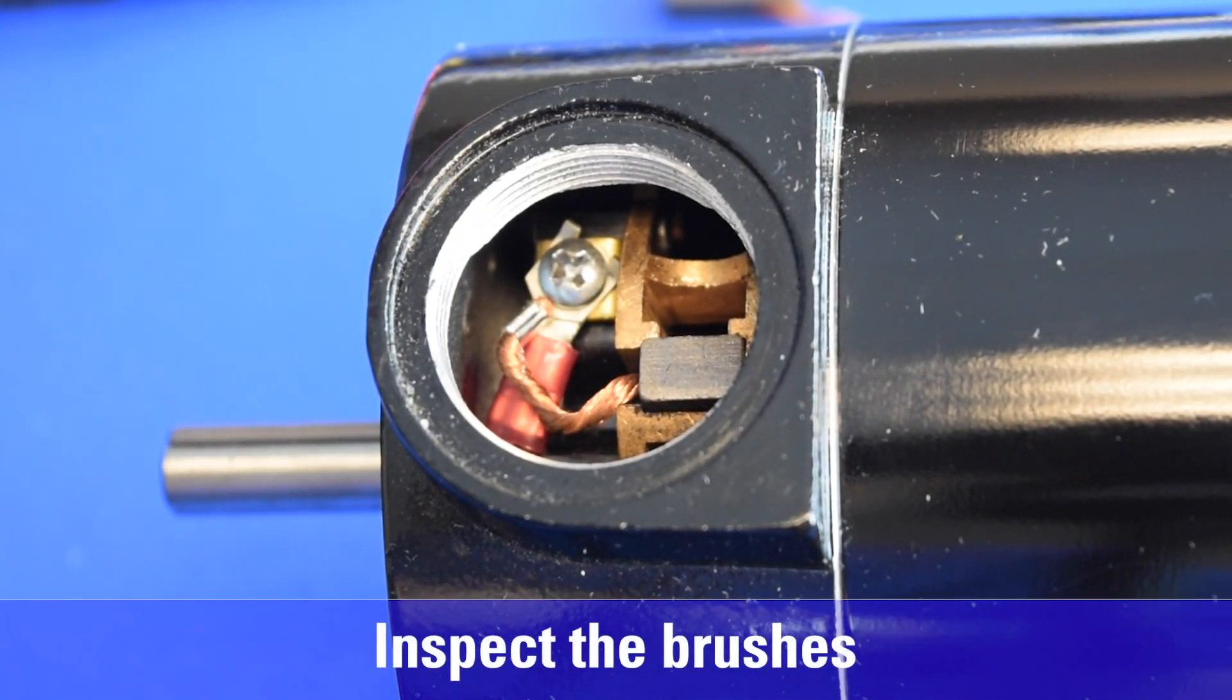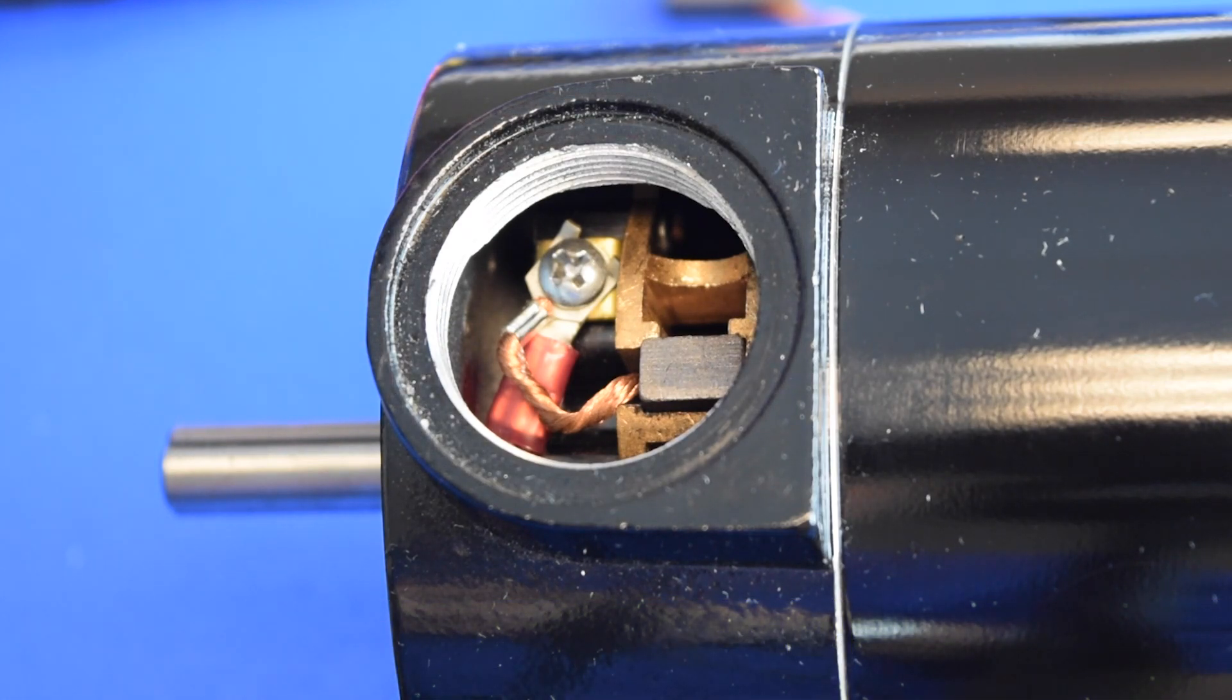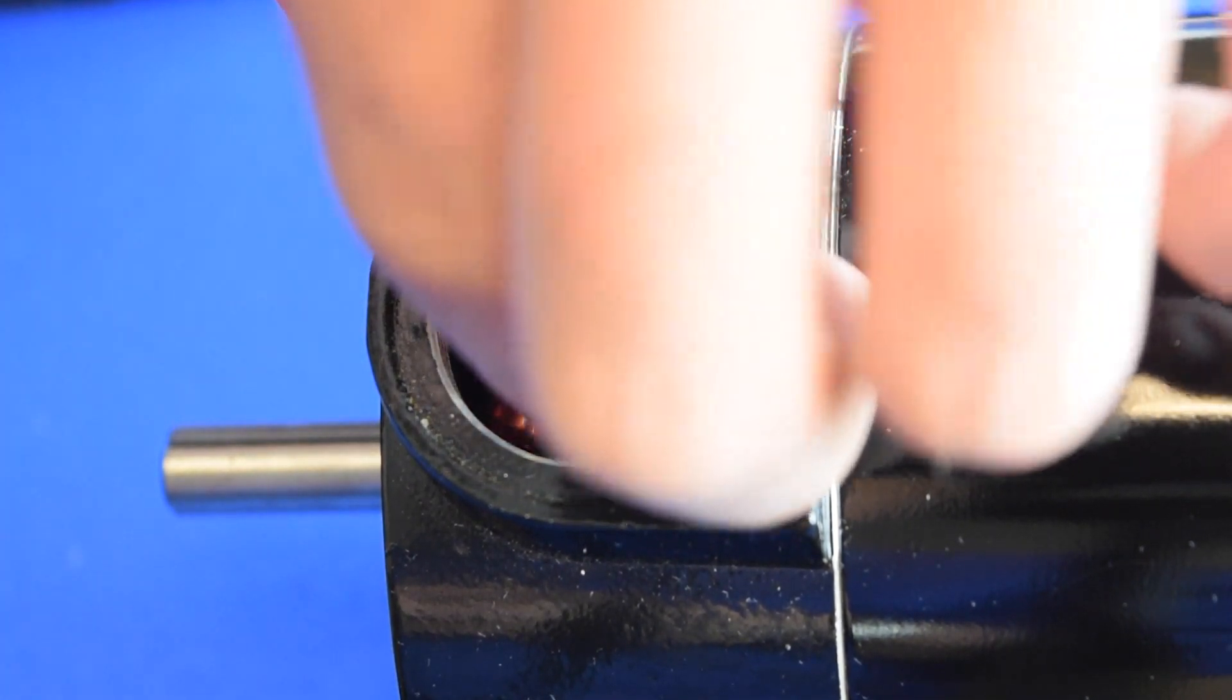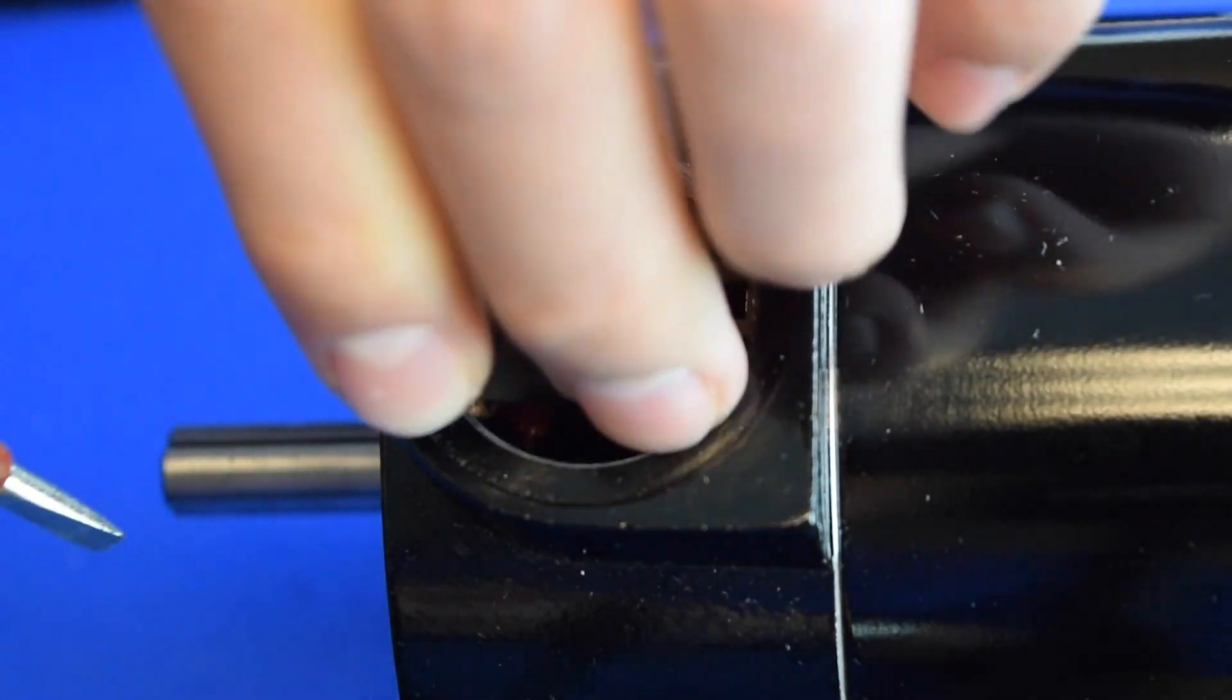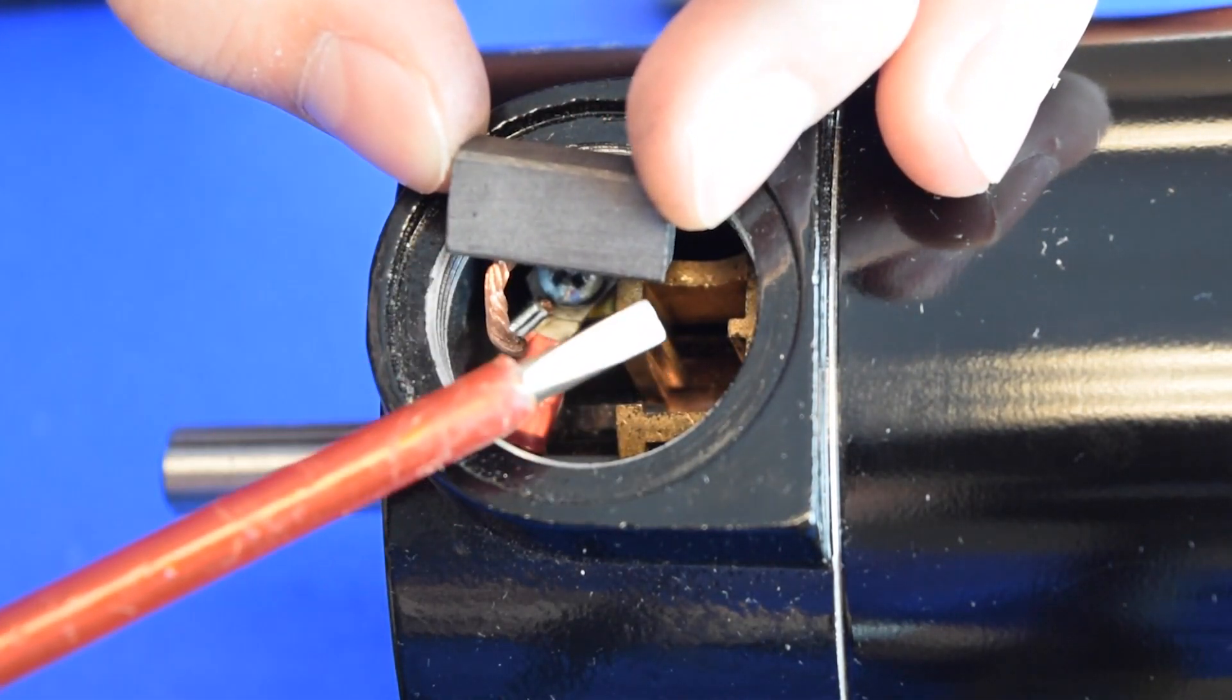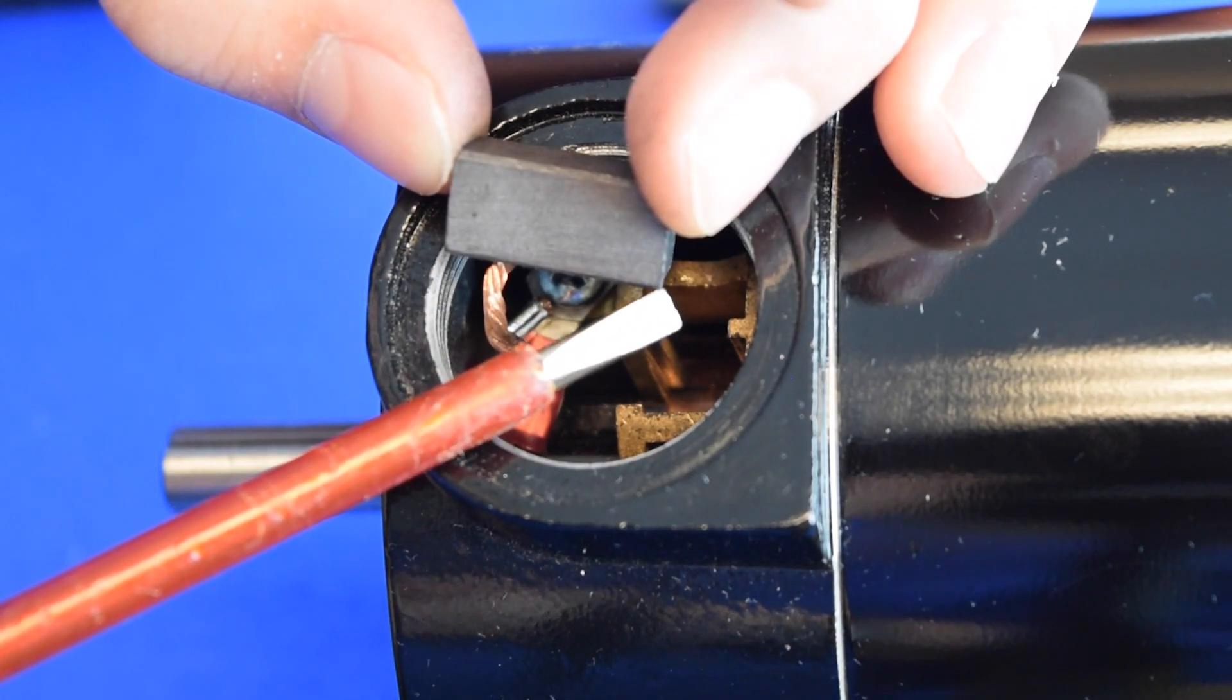Next, we inspect the brushes. It is not necessary to disconnect the brush wires just to inspect the brushes. Insert a small screwdriver under the brush wire and pull the brush out of the brush box. Measure the length of the brush from the point where the wire merges with the brush to the end of the brush that contacts the commutator inside the motor.